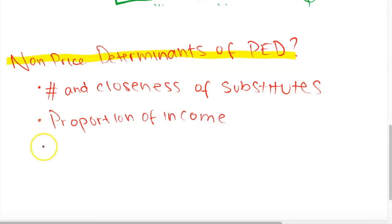The next determinant is the proportion of income that a good represents. A good like a paperclip represents such a minimal proportion of income that a change in its price won't much affect quantity demanded. Whereas a good like a car represents a greater proportion of income, so if its price increases, quantity demanded will decrease proportionately more. The greater the proportion of income a good represents, the more likely it is to be relatively elastic.